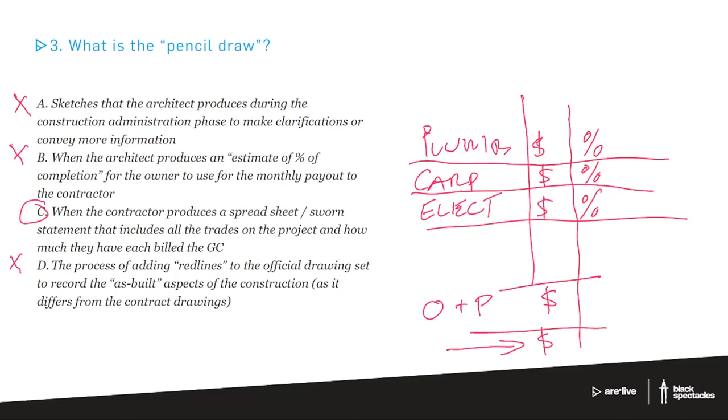And the owner uses that as a tool to know how much they should pay the GC. They pay the GC, the GC then takes that money and then pays all of those individual trades people. So all of that gets paid and the retainage goes off to the escrow account in the bank somewhere. So pencil draw, produced by the contractor, reviewed by the architect, signed off by both contractor and architect, and then used once it becomes the final draw, not the pencil draw, used by the owner to pay everybody, to pay the GC who then pays everybody. Okay, that was complicated.